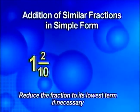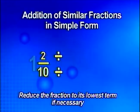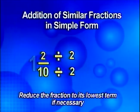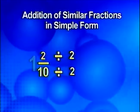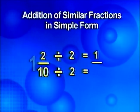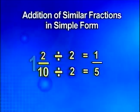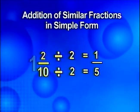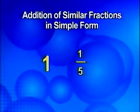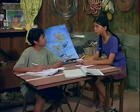Reduce the fraction part of two tenths to its lowest term by dividing the numerator and denominator by two. So two divided by two is one, ten divided by two is five. Therefore, the simplest form of one and two tenths is one and one fifths.